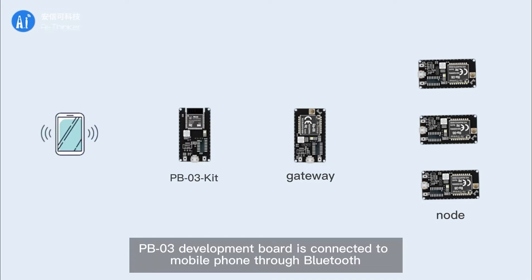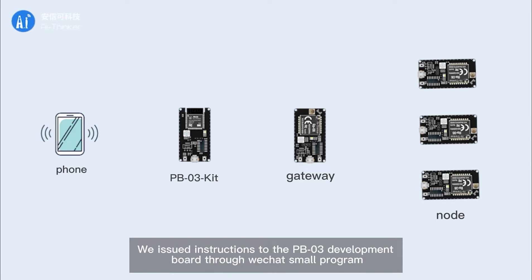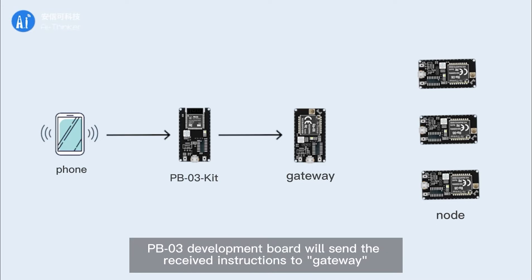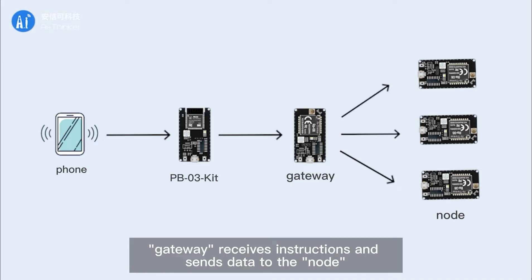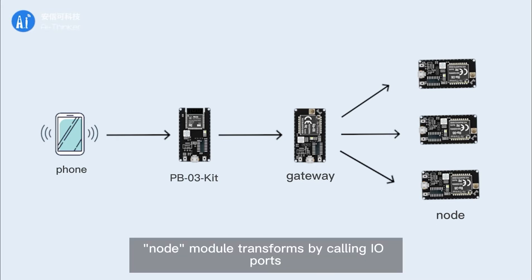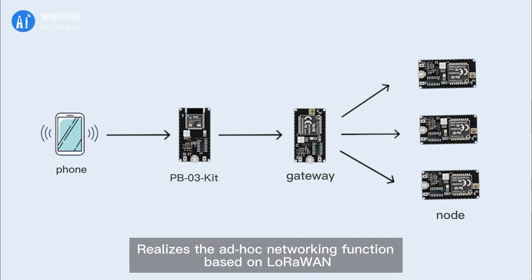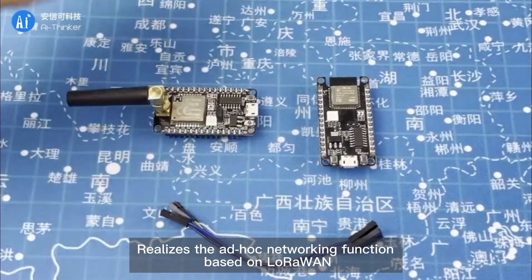The PB03 development board is connected to the mobile phone through Bluetooth. We issue instructions to the PB03 development board through the WeChat mini program. PB03 then sends the received instructions to the gateway. The gateway receives instructions and sends data to the nodes, and each node module responds by calling its I/O ports, realizing the ad hoc networking function based on LoRa.